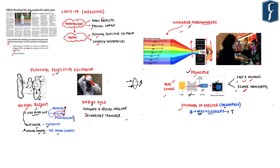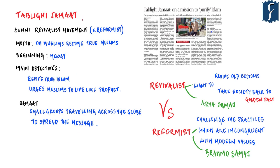The next news on page number 8 is about Tablighi Jamaat — 'on a mission to purify Islam.' This little-known Islamic organization has been at the center of controversy after thousands of people who attended a religious congregation held at its Delhi headquarters tested positive for COVID-19. The organization itself is a sect within Sunni Islam, but it is important to understand the context of art and culture — specifically revivalist and reformist movements in our country.